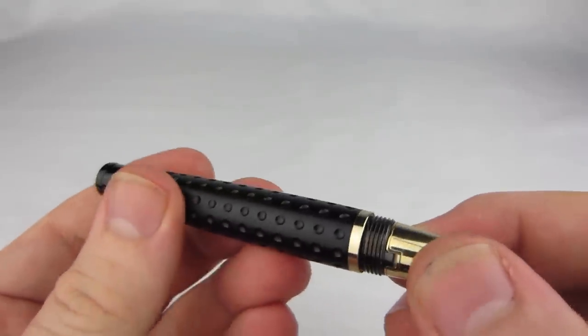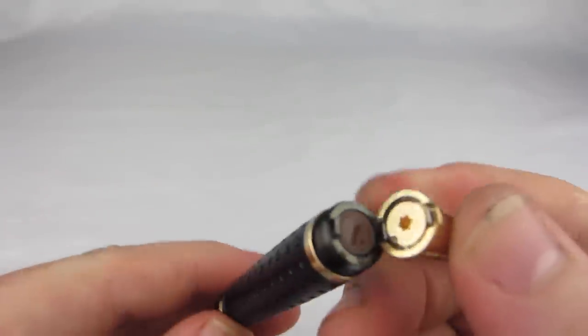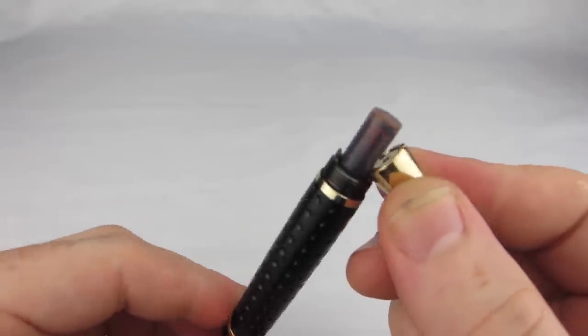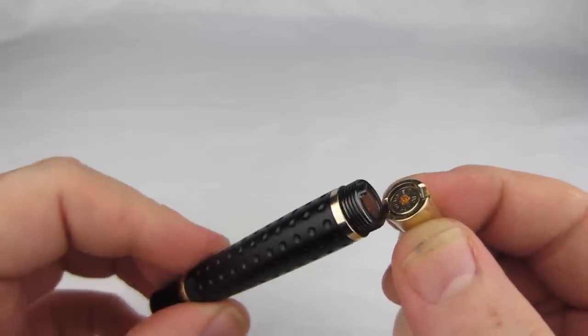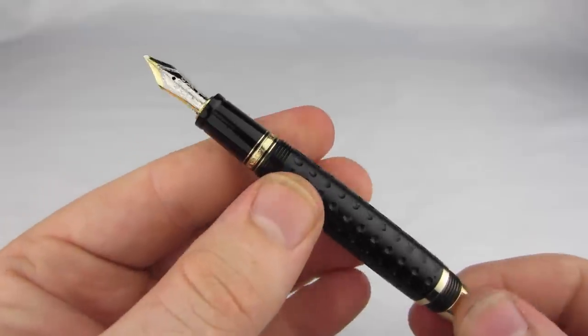Filling the pen is a simple affair. Pop open the end knob and keep a good grip on it, then twist the barrel to eject the cartridge. There's not a lot of room here, so unfortunately this pen is cartridge only. Usually that's a deal breaker for me, but not in this case, because the nib is awesome.